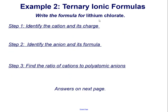Example 2: write the formula for lithium chlorate. Follow these steps. Step 1: identify the cation and its charge. Step 2: identify the anion and its formula. Step 3: find the ratio of cations to polyatomic anions. Pause now to answer these questions, and then the answers will be on the next page.